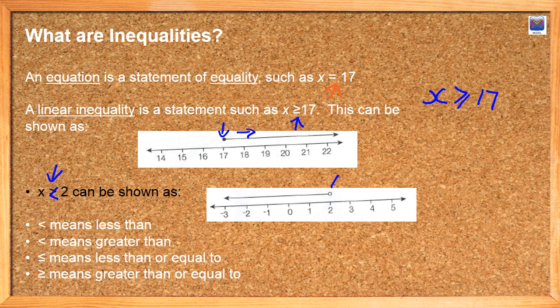Okay, and we show that by the circle on the number line there. So x can't actually be 2, but it can be anything less than 2. So we've got those symbols where just the line like that means less than or greater than. But when we have the extra little equals looking thing on there, less than or equal to, greater than or equal to.